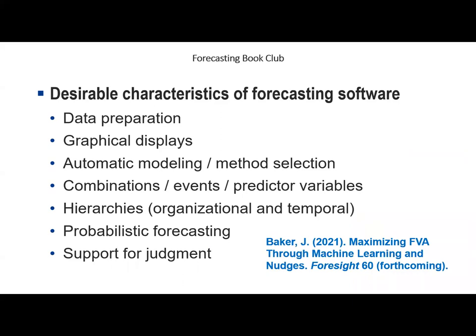Despite the dangers of applying judgment to a statistical forecast, it's still necessary to have the ability to make judgmental adjustments. Methods like forecast value added (FVA) analysis, which Paul covered in chapter 3, help identify when adjustments are doing harm and making the forecast worse. Over the last couple of years, there have been some promising innovations in using machine learning to guide forecasts — presentations by Kellogg's and SAS R&D show methods to identify which forecasts are most likely to benefit from an adjustment and by how much.